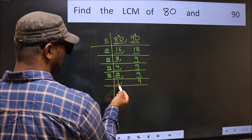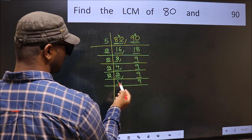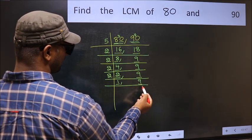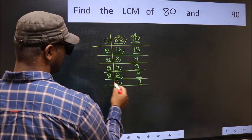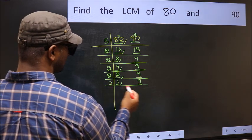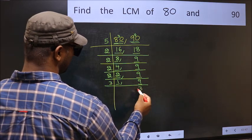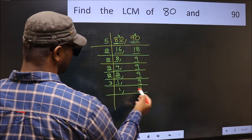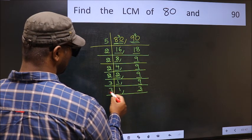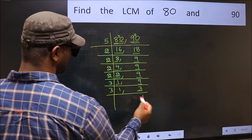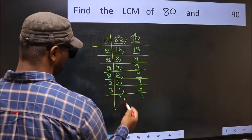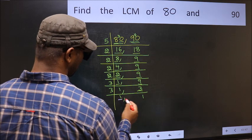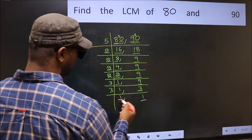Now we got 1 here, so we focus on the next number, 9. 9 in the 3 table: 3 times 3 is 9. Now we have 3. 3 is a prime number, so 3 times 1 is 3. We now have 1 in both places.